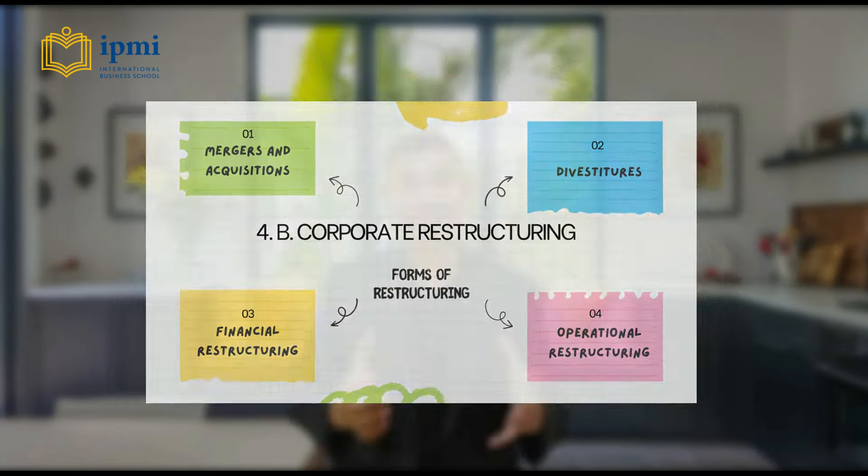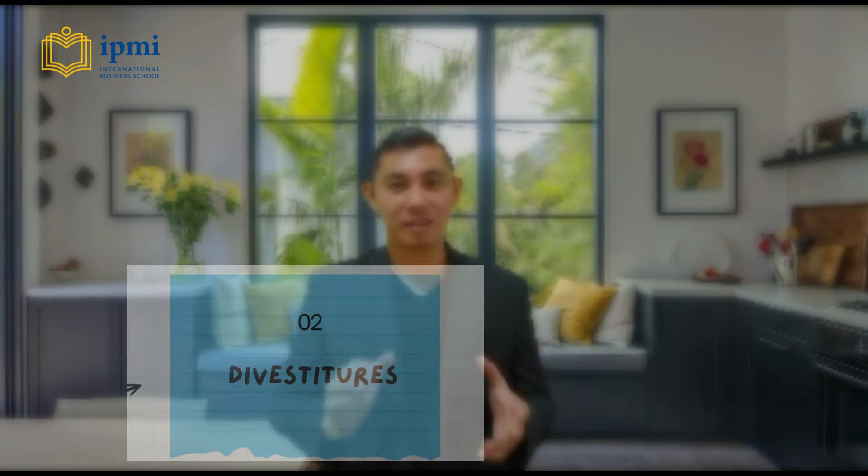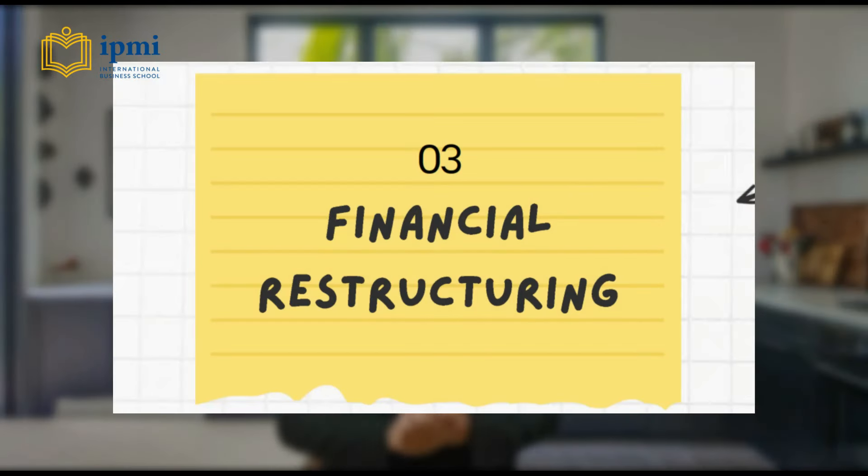Corporate restructuring refers to significant changes in a company's organizational structure, operations, or financial structure with the goal of improving efficiency, competitiveness, or financial performance. Forms of restructuring include mergers and acquisitions — combining companies to achieve synergies and strategic objectives — divestitures, which involve selling business units or assets to streamline operations or raise capital, financial restructuring by modifying capital structure to enhance financial stability, and operational restructuring to improve efficiency and effectiveness.